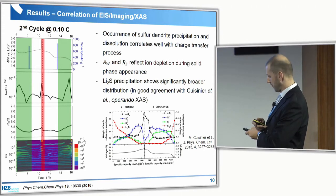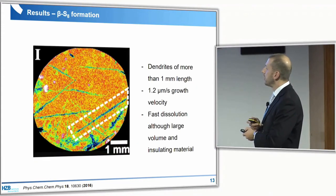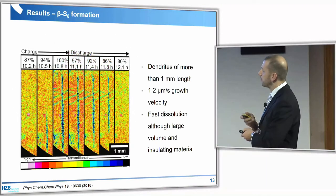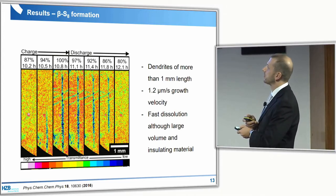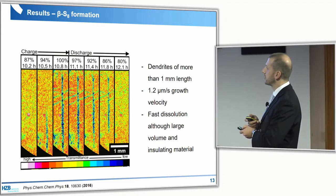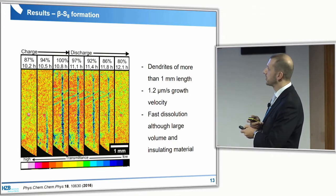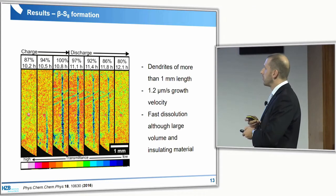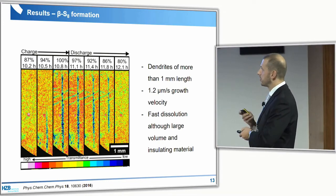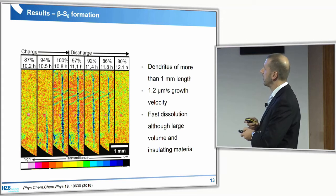This one corresponds to the sulfur precipitation and these dendrites. Because it is an imaging method, we can now follow how fast they form and how fast they dissolve. You have low transmittance when you form the dendrite, and in the vicinity of the dendrites you have a depletion of sulfur species. When you dissolve them, you get more sulfur around the dendrites again. This is quite a fast solution process.